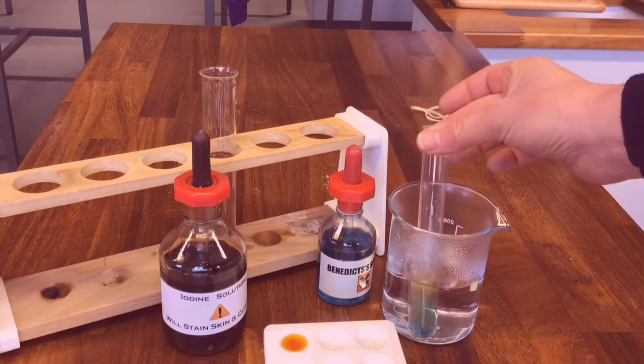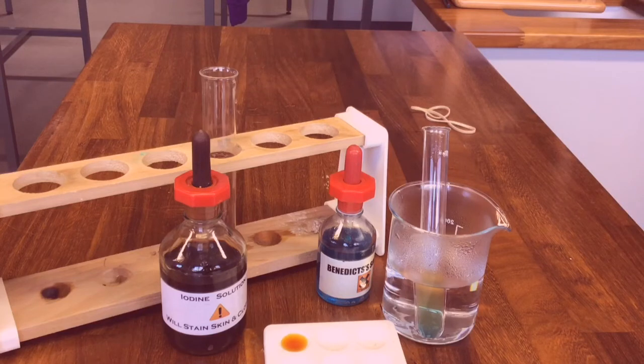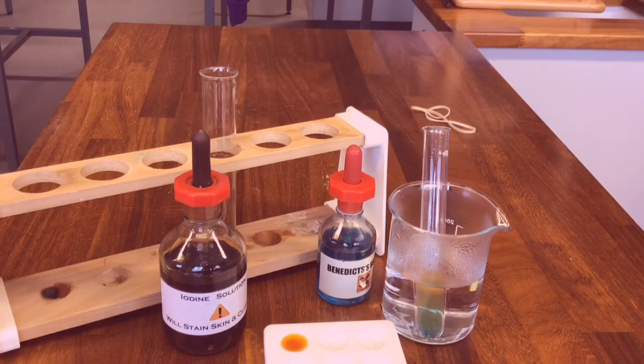You can see it's starting to change so it has changed color when it was heated in the water bath. The iodine stayed yellow-brown meaning there was no starch present. So those are the results for the model gut experiment.